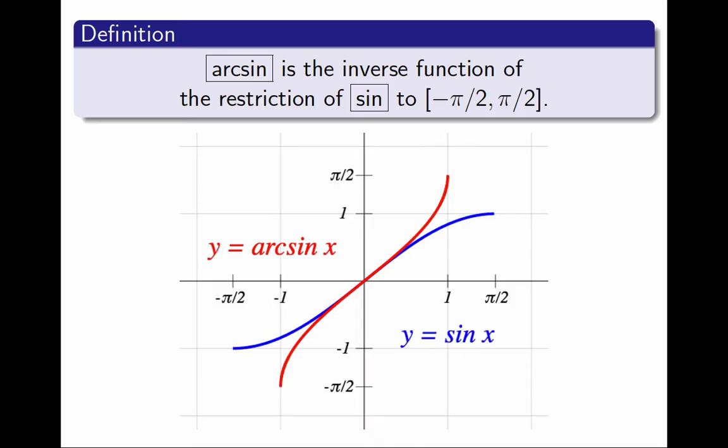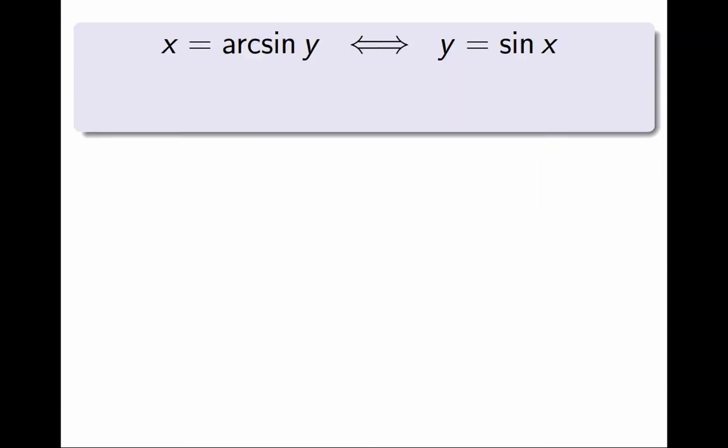We can also summarize that the functions are inverses of each other with the following statement. x equals arcsine y if and only if y equals sin x. As long as x and y are in the right intervals, this is for all x between minus pi over 2 and pi over 2, inclusive, and for all y between minus 1 and 1, inclusive.